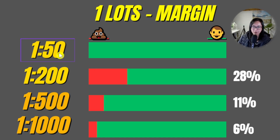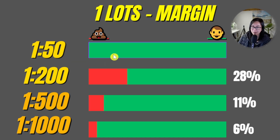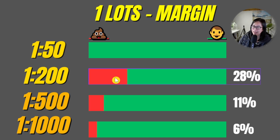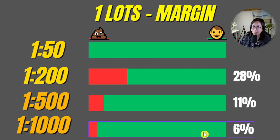We've got the four accounts: 1:50, 1:200, 1:500, and 1:1000. For the 1:50 leverage account, I was unable to open a one lot trade. For the 1:200 account, the broker took 28% of our $2,000 account — we haven't lost that money, the broker is just putting it aside and will return it after the trade. At 1:1000, the broker is only keeping 6% of our entire account. The green part on the right is the free margin — the money we still have available to place more trades.